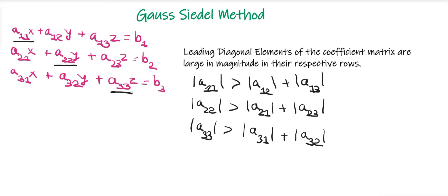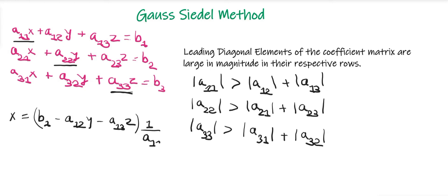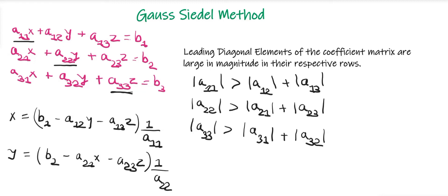Once this condition is satisfied, we can start with the Gauss-Seidel method, in which we rewrite the equations in the form of x, y, and z. The first equation gives x = (1/a11)(b1 - a12y - a13z). Then y = (b2 - a21x - a23z) / a22, and z = (b3 - a31x - a32y) / a33.